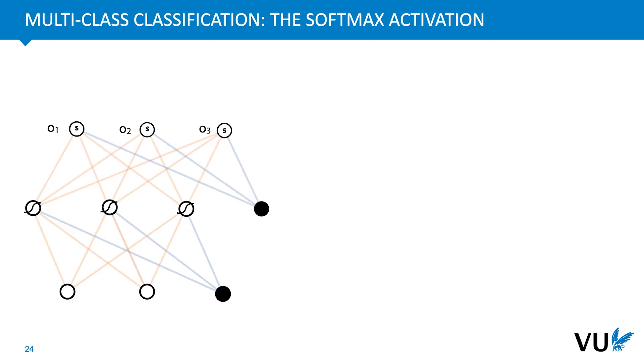So what if we have more than one class? Then we want the network to somehow output a probability distribution over all classes. We can't do this with a single node anymore. And instead, we'll give the network one output node for every possible class. So in this case, we have three possible classes, so we've given the network three output nodes.